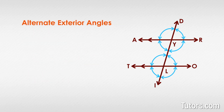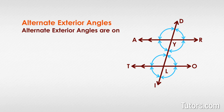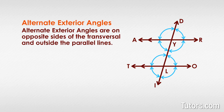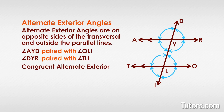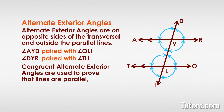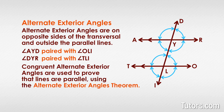Alternate exterior angles are similar to vertex angles in that they are opposite angles on either side of the transversal. Alternate exterior angles are on opposite sides of the transversal — that's the alternate part — and outside the parallel lines — that's the exterior part. The two pairs of alternate exterior angles in our drawing are angle A-Y-D paired with angle O-L-I, and angle D-Y-R paired with angle T-L-I. Congruent alternate exterior angles are used to prove that lines are parallel, using the alternate exterior angles theorem.